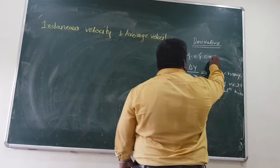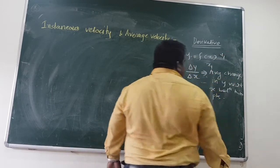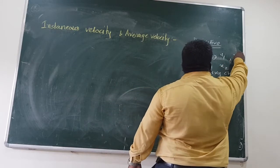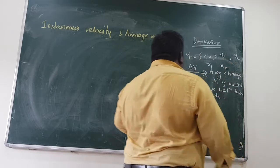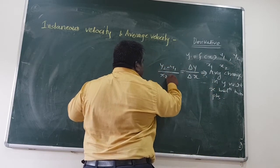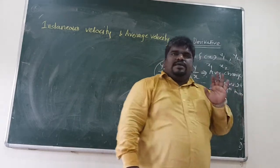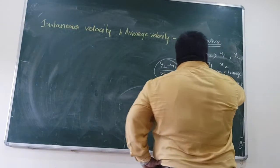So you substitute x equal to x1, you will get some value of y — that is y1. You substitute x equal to x2, you will get some value y2. Now you find out y2 minus y1 divided by x2 minus x1. Whatever you find out is called average change in y with respect to x.